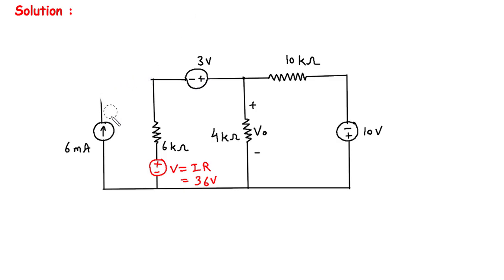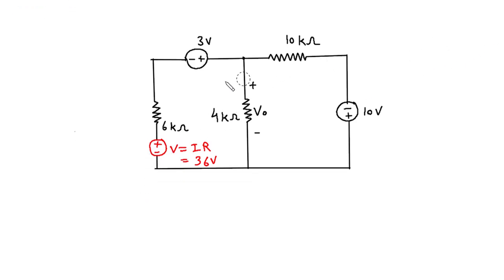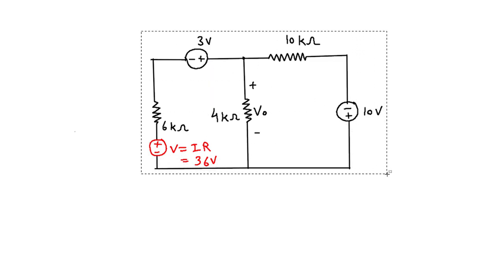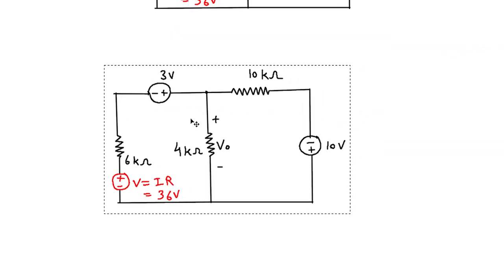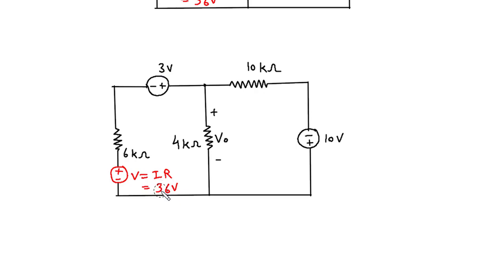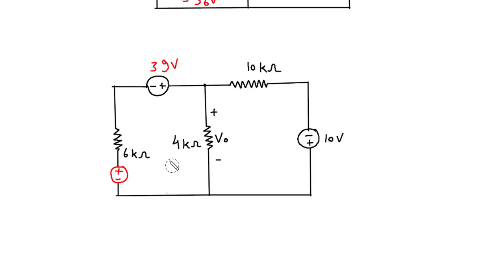Now we can erase this current source. Here we can see this voltage source and this voltage source are in series, so we can combine them and redraw the circuit. The polarity is plus-minus plus-minus, so they will be added: 3 plus 36 will be 39 volt. We will take this as 39 volt.